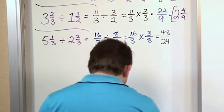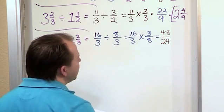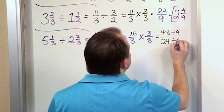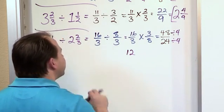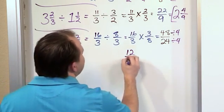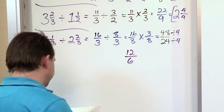And then we see that we can simplify this quite a bit because we can divide the top and the bottom by 4. 48 divided by 4, if you think about it, is 12, because 12 times 4 is 48. And 24 divided by 4 is 6, because 6 times 4 is 24.